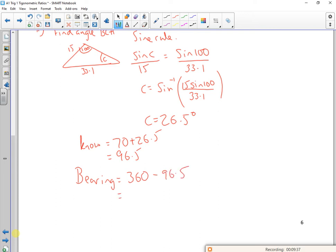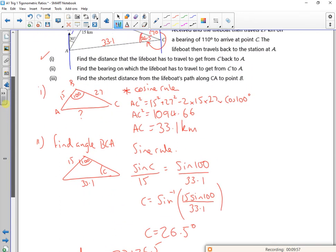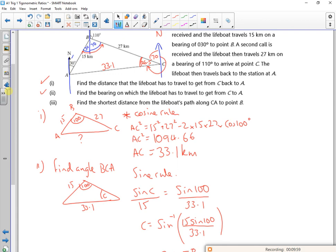So the bearing is 360 take away 96.5, which is, what's that going to be? 263.5. So I guess 264 degrees, because we tend to go 360. Three numbers don't refer an angle. Although if you were one degree out and you were aiming for France, they'd probably end up in Spain. So here we go. So that's part two done. So now it says...